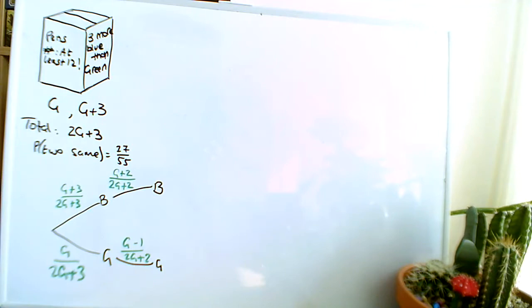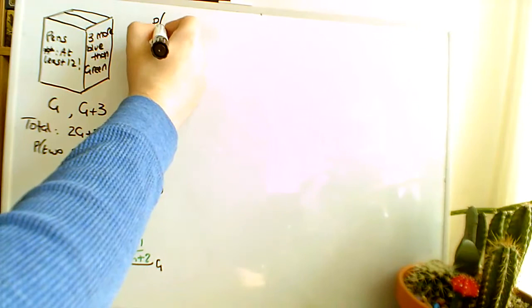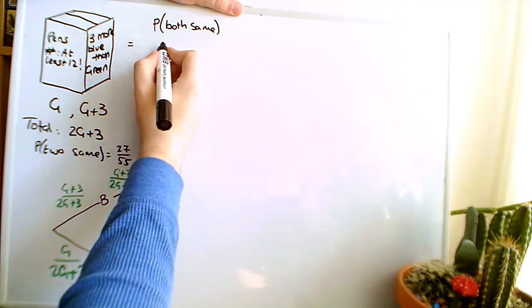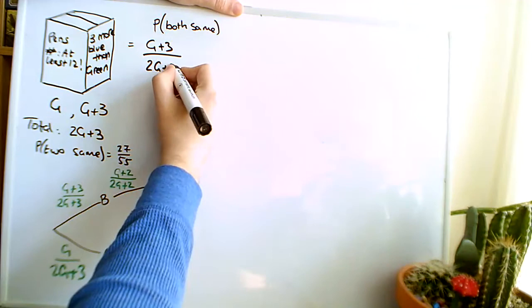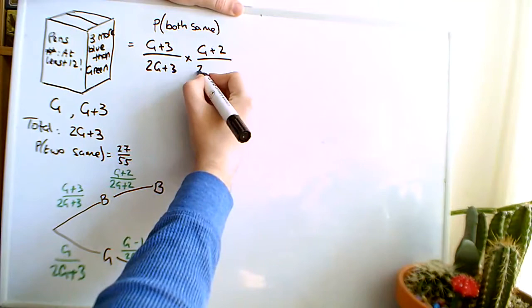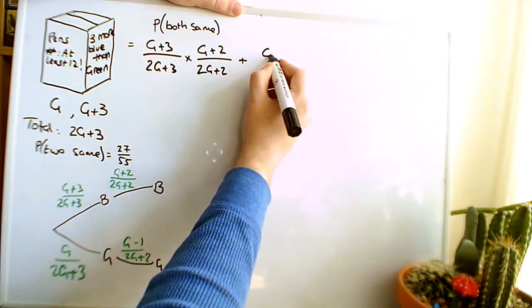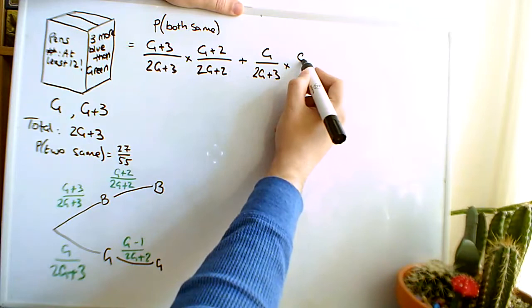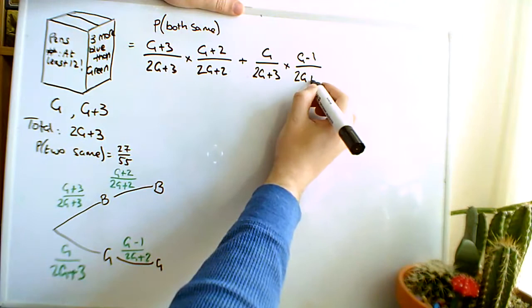So using what we know about multiplying probabilities, the probability of getting two blues is going to be the product of these two things, the probability of getting two greens is the product of these two things here. So the probability both the same is equal to G plus 3 over 2G plus 3, times by G plus 2 over 2G plus 2, and that's added to G, so this is the probability now of getting two greens, over 2G plus 3, times by G minus 1 over 2G plus 2.